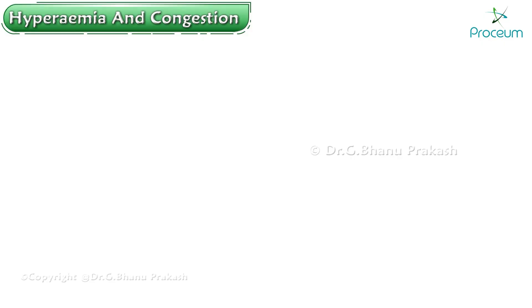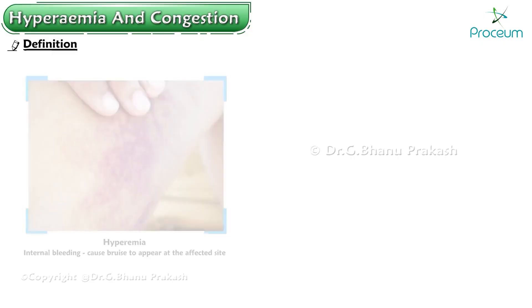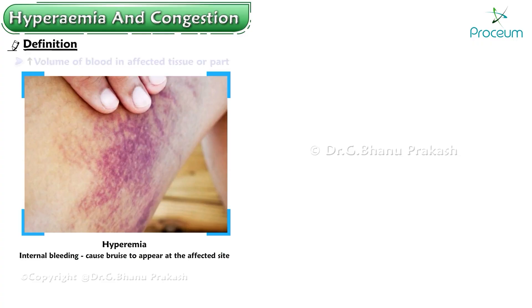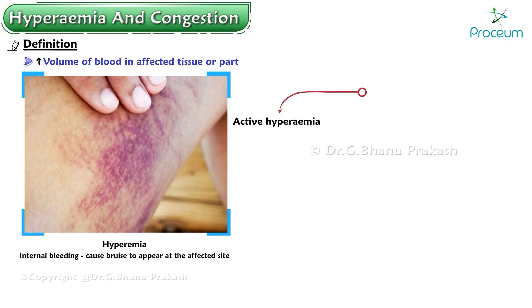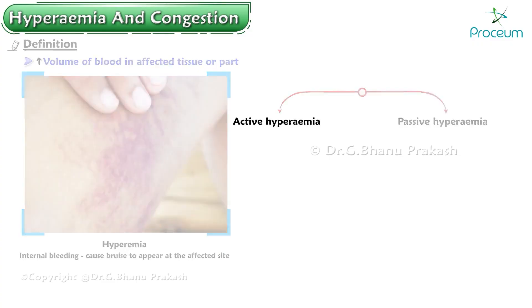Hyperemia is an increased volume of blood in affected tissue or part. It is of two types: active hyperemia and passive hyperemia.